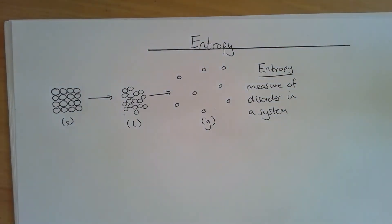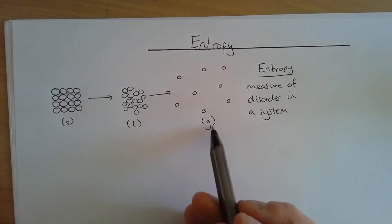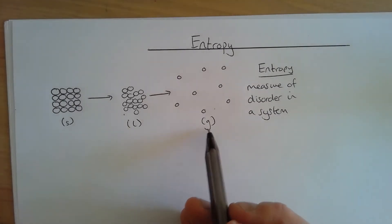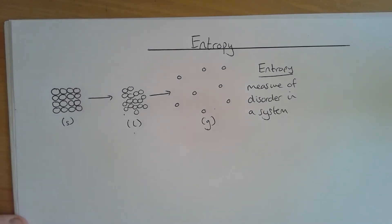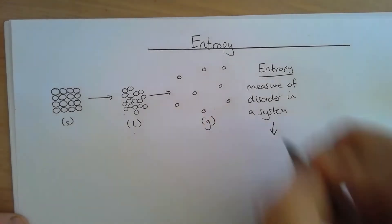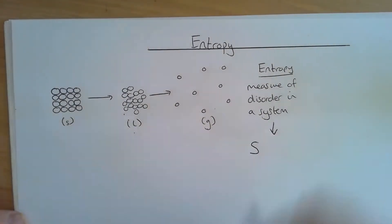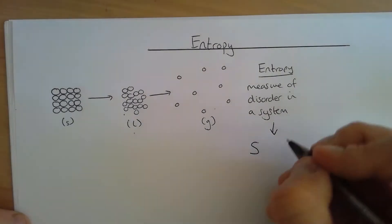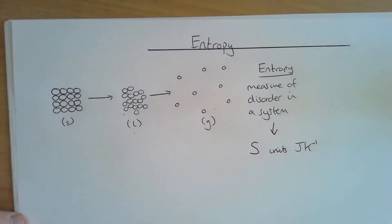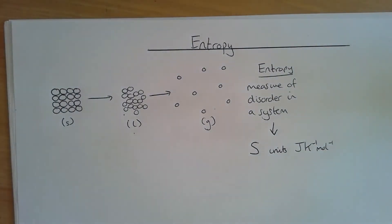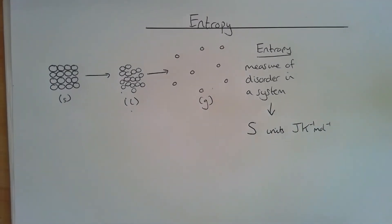The more disordered a system is, the greater its entropy. In terms of entropy, a gas has greater entropy than a liquid, which has greater entropy than a solid. The symbol for entropy is a capital S, and the units are frequently joules per kelvin per mole.